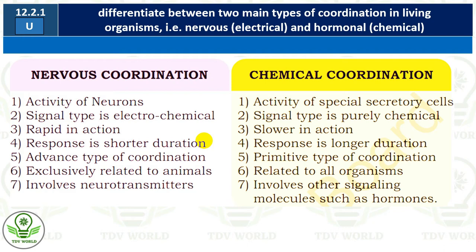In chemical coordination, the response is of longer duration. For example, growth hormones work for approximately 18 to 22 years — that is a longer duration response. Fifth point: nervous coordination is an advanced type of coordination, while chemical coordination is primitive — a more basic type. Sixth point: nervous coordination is exclusively related to animals, while chemical coordination occurs in both plants and animals.